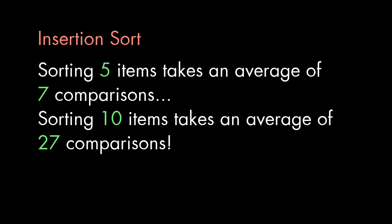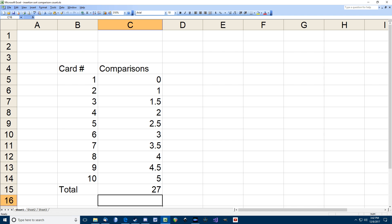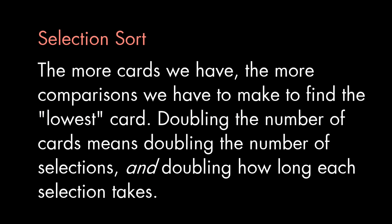For example, if we sort five items, we're going to make seven comparisons on average total. But if we sort 10 items, we'll make 27. So sorting twice the number of items takes four times as much work.